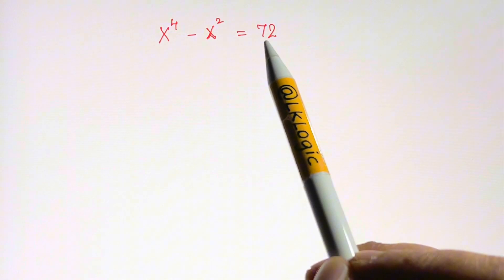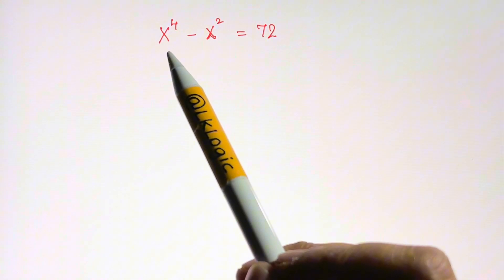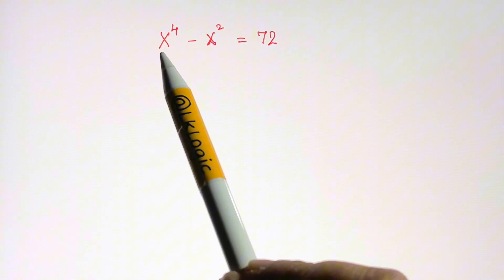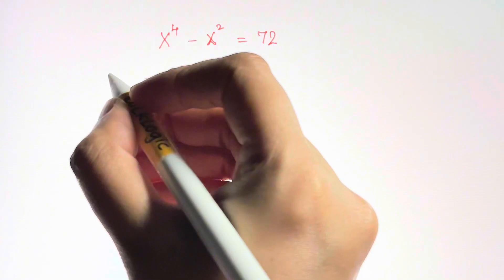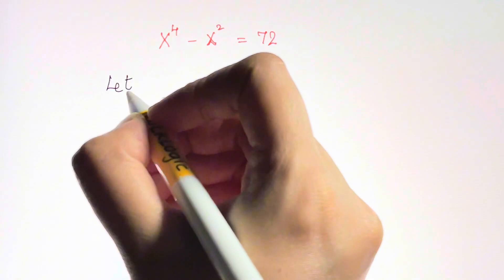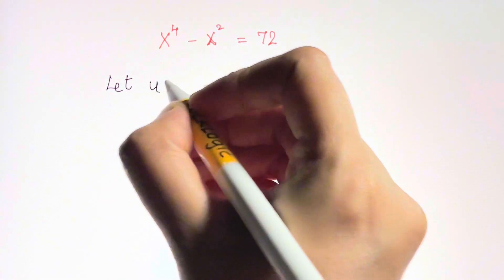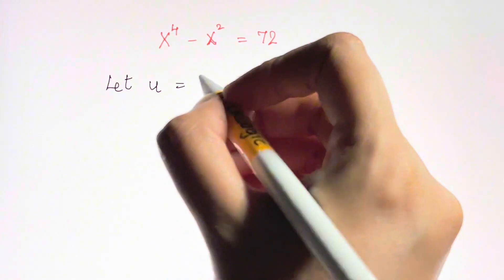Hi guys, here we have a quartic equation. Do you know how to solve this? Fourth degree equations can be easily solved by just substituting. Let u equal your own variable, whichever you like. Let u is equal to x squared.